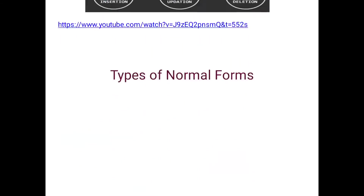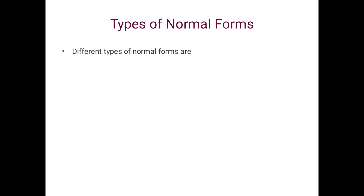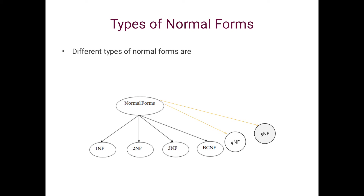The different types of normal forms available in DBMS are: First Normal Form, Second Normal Form, Third Normal Form, Boyce-Codd Normal Form, Fourth Normal Form, and Fifth Normal Form. Please remember this order — if your aim is to convert a relational table into 4NF, you must first convert it into BCNF.